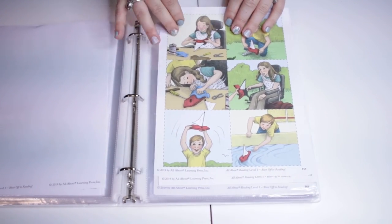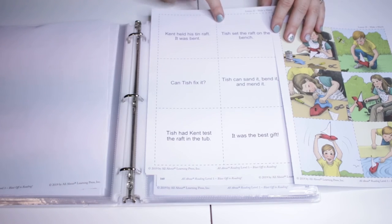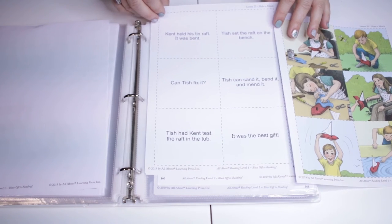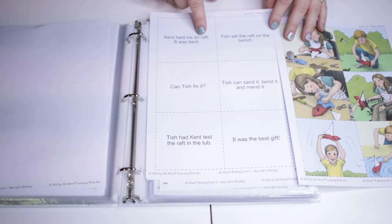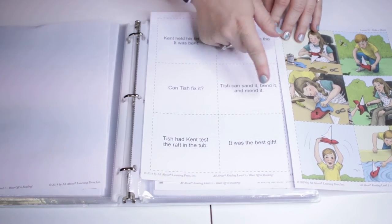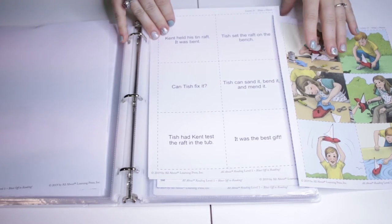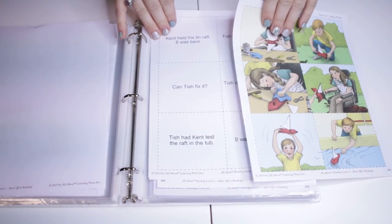Then here is another lesson. We're going to cut out these pages and I think it's working on sequence. Yes, it's kind of a sequence game and a matching game. So right here it'll say Kent held his raft, it was bent, Tish set the raft on the bench. So you would find the photos that correlate with what's being said.